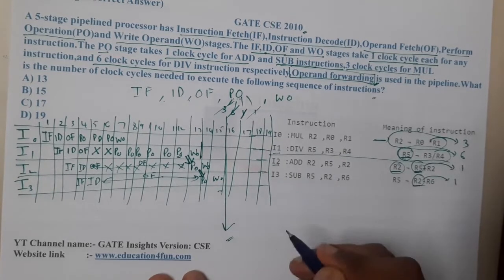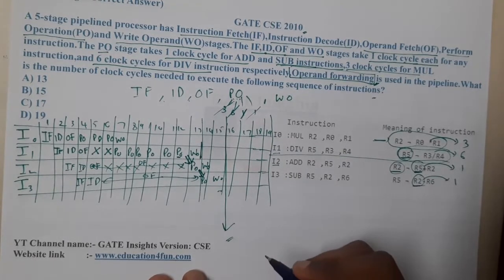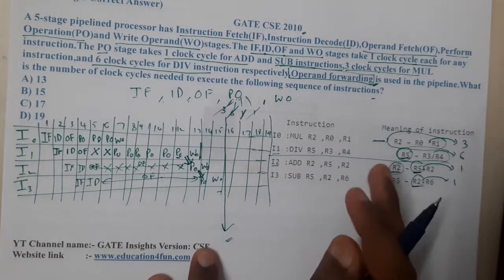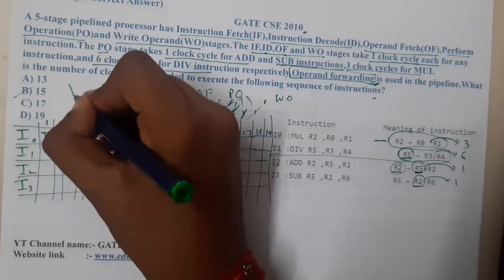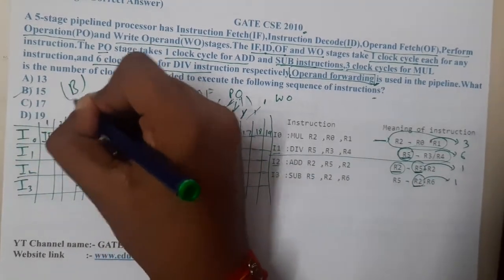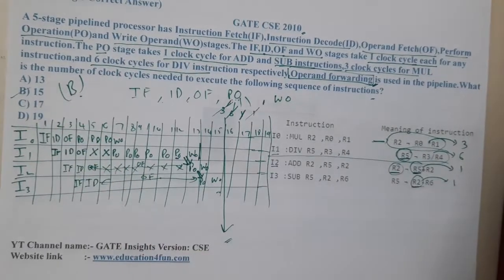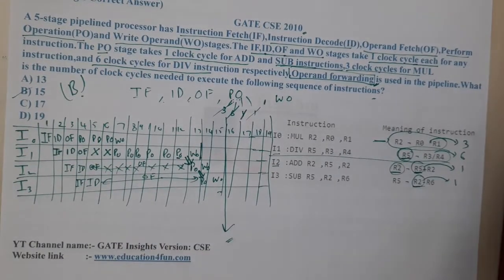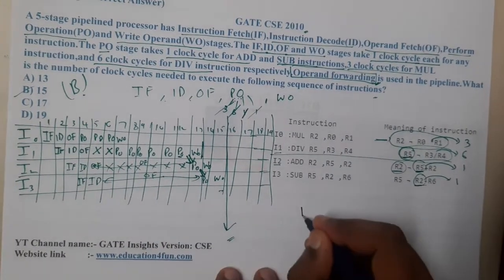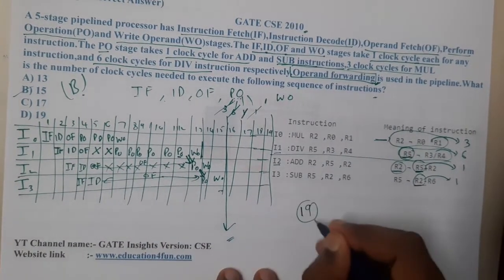At the end of 15 cycles, we complete all instructions with operand forwarding. The answer is option B: 15 clock cycles. If you solve the same problem without forwarding, you get 19 cycles.